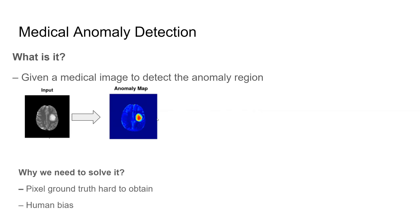Why do we need to solve this problem? This is because segmentation ground truth is really hard to obtain — it requires a lot of people with professional knowledge, like doctors, to do the labeling. And because the doctors are doing the labeling, there are also human biases in the dataset, which might affect our training result in the future.